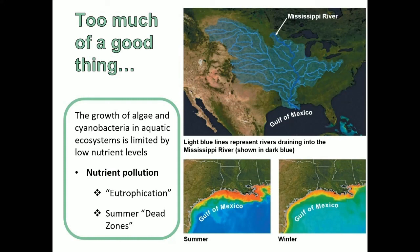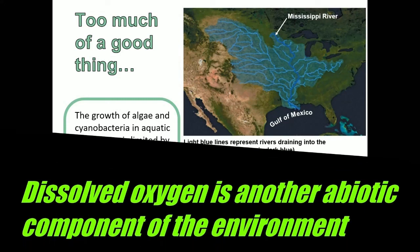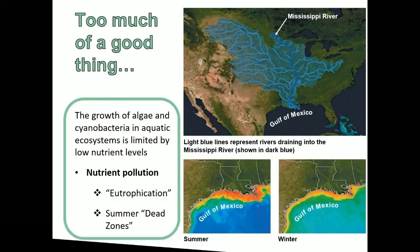When algae receive that influx of nutrients, they spike in growth, dividing and reproducing very quickly. However, they don't live long, and when they die, other organisms consume them and they decay through cellular respiration — which requires oxygen. So all the dissolved oxygen in the Gulf of Mexico starts getting consumed as these bacteria and algae die off, creating dead zones. These seasonal dead zones appear in the Gulf of Mexico every year, and many dead fish wash up on shore as a result of this nutrient pollution — all the nutrients from middle America concentrated into one location.